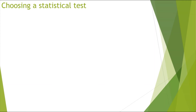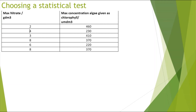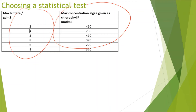Now going through choosing a statistical test. You can be given data and expected to choose a statistical test and analyse the information. For example, I've been given a table with the max nitrate concentration on the left side and the max concentration of algae on the right side. In this case, the statistical test I would choose would be the Spearman rank correlation test.